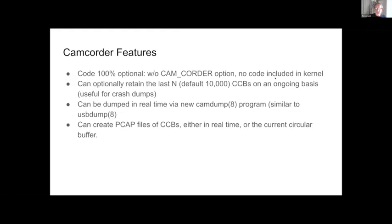I can extract the CCBs and know they're there, but I've not yet been able to use this to debug my particular problem. The other thing we can do is dump and view in real time. I've written a cam-dump program similar to USB dump that dumps the different CCBs. Right now the printing is really primitive — it just prints the type and a couple of interesting fields for each type. It needs a lot of work. We can also create PCAP files with CCBs, either in real time or captured after the fact.